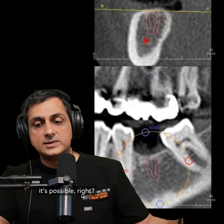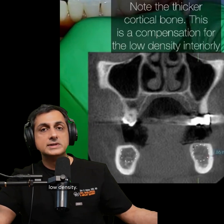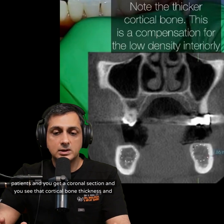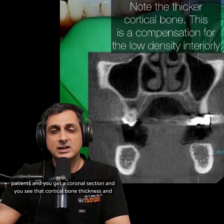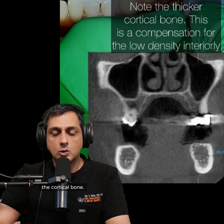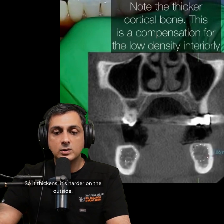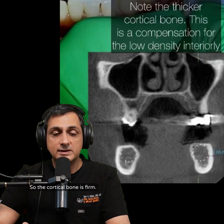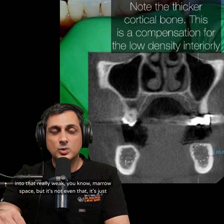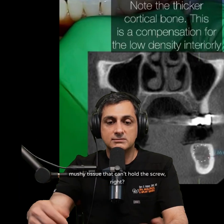The thicker cortical bone is a compensation for low density. What we think is happening is that the outer cortical bone is compensating for the low bone density inside — it thickens, it's harder on the outside. But once you pop through that while placing an implant, you're getting into really weak marrow space — mushy tissue that can't hold a screw.